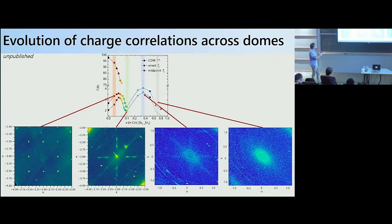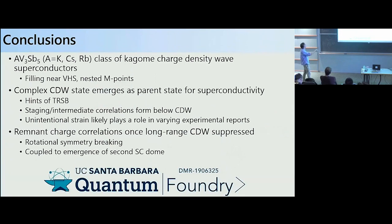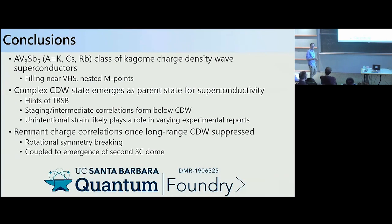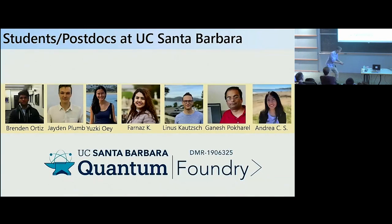In summary: these are interesting charge density wave superconductors with filling near the Van Hove points. There are hints of time reversal symmetry breaking, but also interesting staging of intermediate correlations as you cool in the parent system, which can be stabilized to static behavior upon doping or applying pressure. Unintentional strain likely plays a large role in some experimental discrepancies, and sample preparation is important given how soft these materials are.